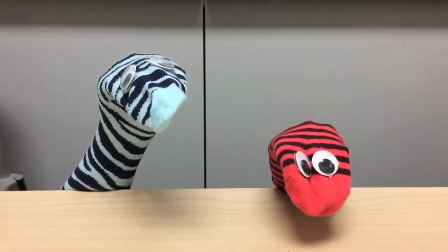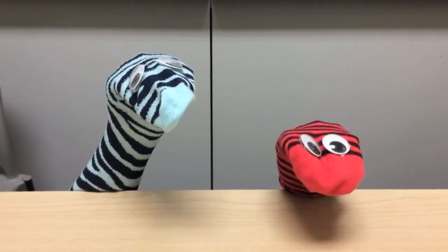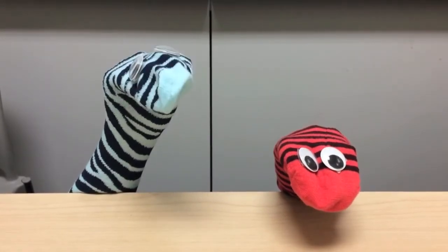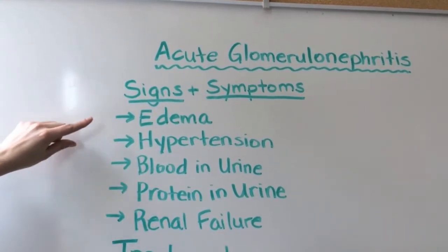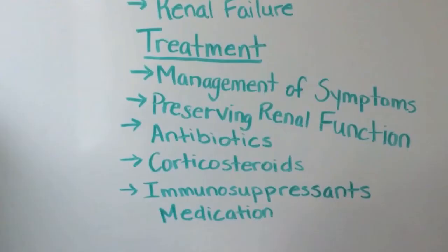In both cases, the inflammatory response that follows damage to the filtration membrane allows blood proteins and blood cells to pass into the renal tubules and into the urine. Symptoms include edema, hypertension, blood in the urine, protein in the urine, and, if left untreated, renal failure.